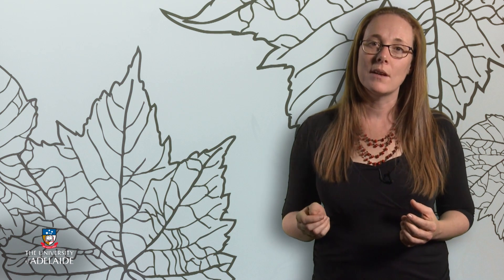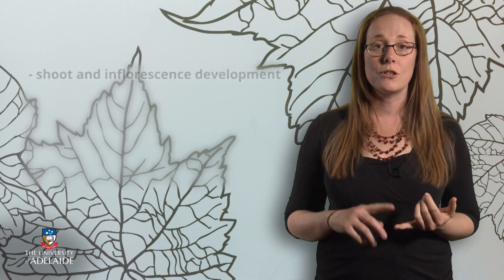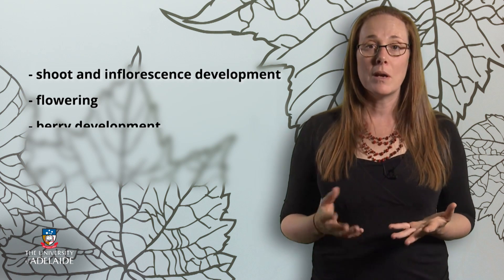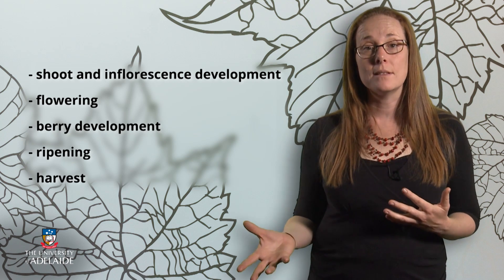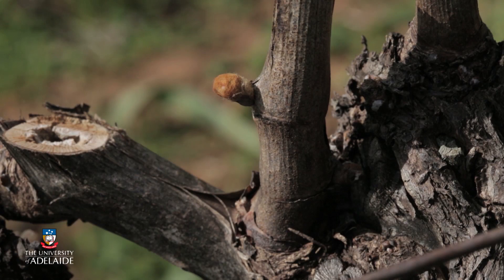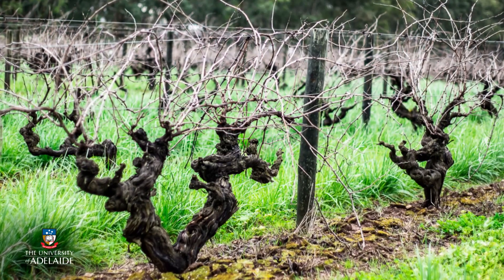Grapevine development plays a very important role in winemaking. The condition and treatment of the vine during its seasonal growing cycle can have a big impact on grape development and subsequent wine quality. The major growth stages during the grapevine seasonal growth cycle are shoot and inflorescence development, flowering, berry development, ripening and harvest. These major stages are comprised of many developmental stages starting with the winter bud stage, when the bud is still in a state of dormancy and finishing with the end of leaf fall.